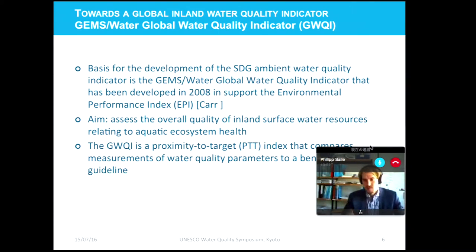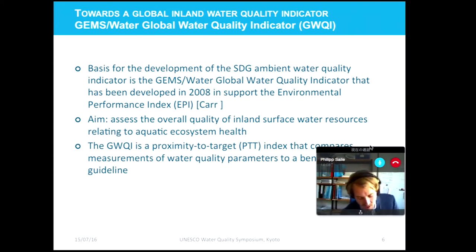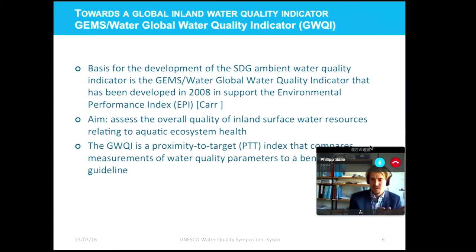The basis for developing the upcoming SDG water quality indicator is the GEMS Water global water quality indicator that was developed in support of the Environmental Performance Index, established in 2008. The aim of that water quality index is to assess the overall quality of inland surface water resources relating to aquatic ecosystem health. The index is a so-called proximity-to-target index that compares measured values at the station level for certain water quality parameters against a benchmark or guideline value.